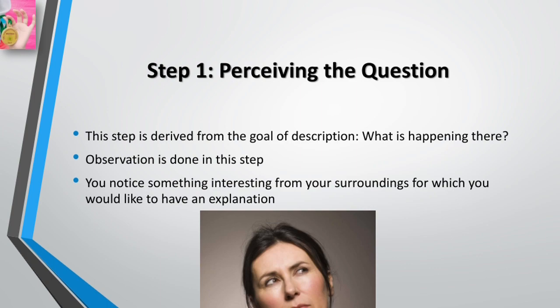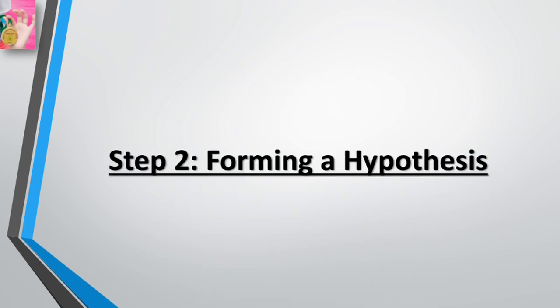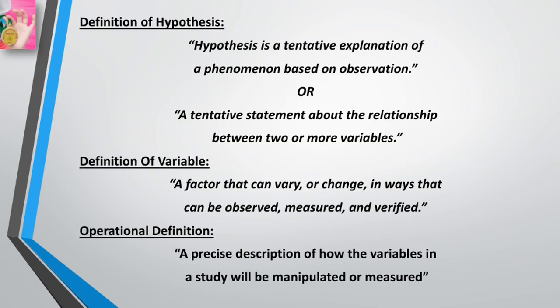Once you have a question, you want an answer. The next logical step is to form a tentative answer or explanation for the behavior you have seen. This tentative explanation is known as a hypothesis, which leads to the second step. A hypothesis is a tentative explanation of a phenomenon based on observations, or a tentative statement about the relationship between two or more variables.